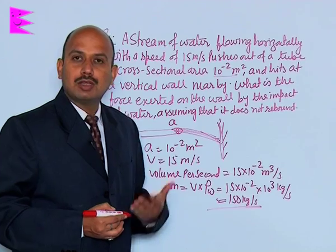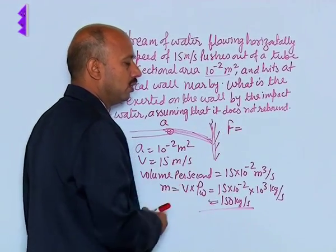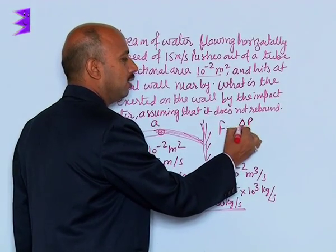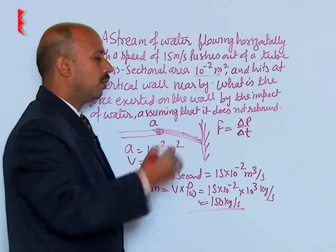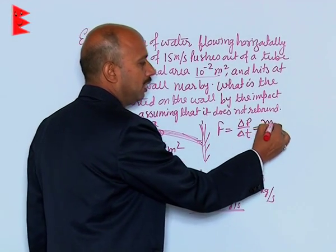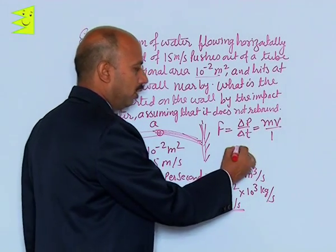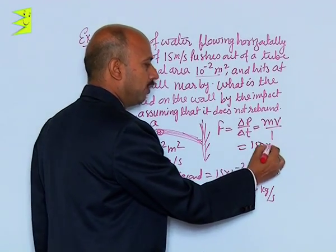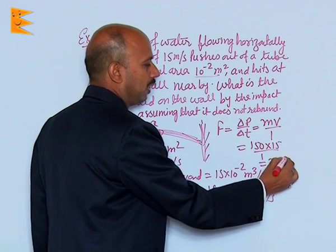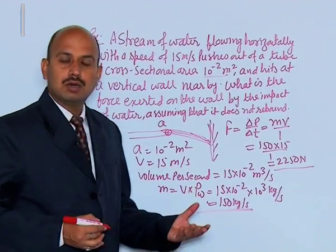So now we have to find out the rate of change of momentum. Force is equal to change in momentum upon time interval, which will be equal to m·v upon 1 because we are taking momentum per second. So here 150 into 15 divided by 1 — that is 2250 Newton. So this much force is acting on the wall.